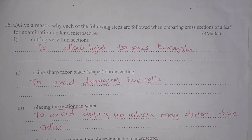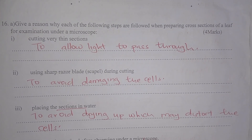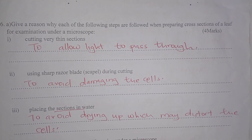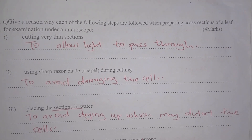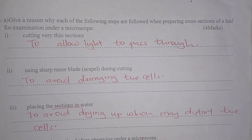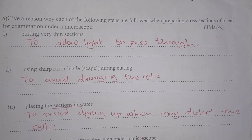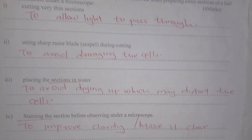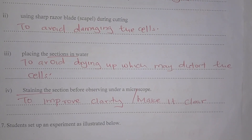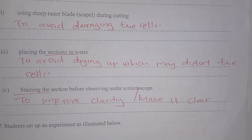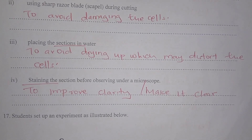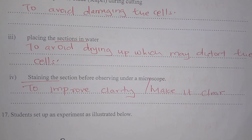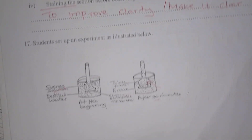Give reasons why each of the following steps are followed when preparing sections: cutting very thin sections — to allow light to pass through; using a sharp razor blade — to avoid damaging the cells; placing sections in water — to avoid them drying up which may distort the cells; staining the cells — to improve clarity and make it easier to see.